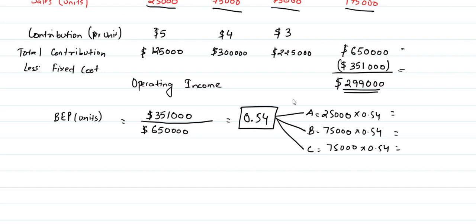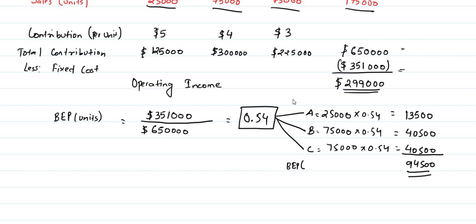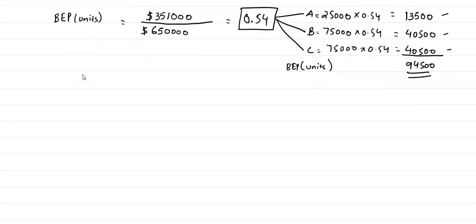So the breakeven units are: product A = 13,500; product B = 40,500; product C = 40,500. The total breakeven point is 13,500 + 40,500 + 40,500 = 94,500 units. The operating income is $299,000. This completes part three, and we now move to question four.